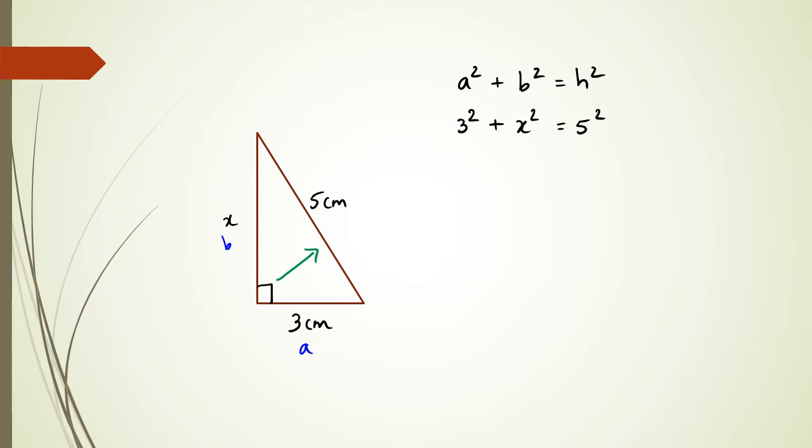So what I have here is 9 + x² = 25, and then rearranging it, x² = 25 - 9, x² = 16, x = √16, which means x is equal to four centimeters. So in this case, the missing side is four centimeters.